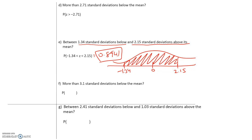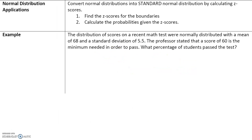Please try letters F and G on your own: more than 3.1 standard deviations below the mean, and between 2.1 standard deviations below the mean and 1.03 standard deviations above the mean. We will go over these in class. To find the probability of a normal distribution, convert it to a standard normal distribution by calculating the z-scores, then calculate the probabilities given the z-scores.